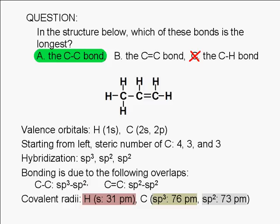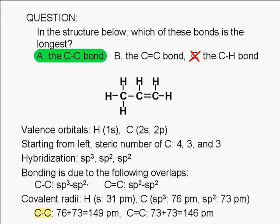The bond length is just equal to the sum of the covalent radii. Therefore, the carbon-to-carbon single bond here is expected to be 149 picometers. 76 plus 73 equals 149. This is 3 picometers longer than the carbon-to-carbon double bond. The carbon-to-carbon bonds are at least 30 picometers longer than the carbon-to-hydrogen bonds since the hydrogen atom's covalent radius is only 31 picometers.